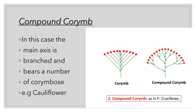Next we have compound corymb. In this case, the main axis is branched and bears a number of corymb clusters. In a simple corymb, the main branch has other branches where older flowers have longer pedicels and younger branches have shorter stalks, and they all come to the same level. In a compound corymb, branches arise from the main branch and have the corymb pattern in all branches — older flowers have long branches, younger flowers have short branches, and they all come together at the same level.